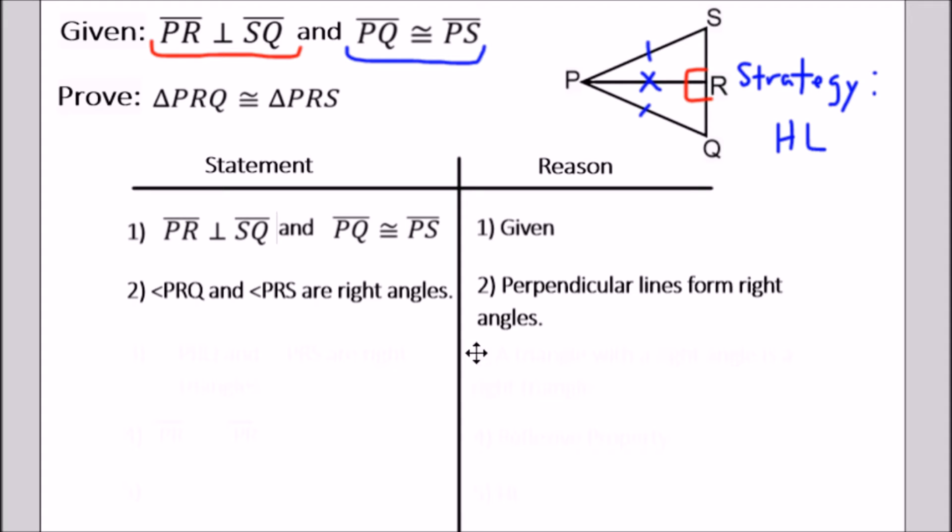This next statement is one of the most crucial statements you need to make. You have to define both of these triangles as right triangles. The reason this is true is that a triangle with a right angle is a right triangle.